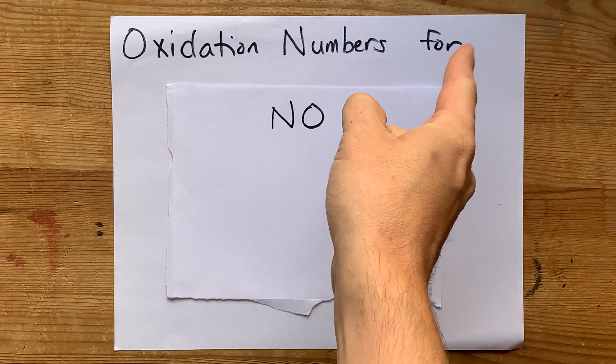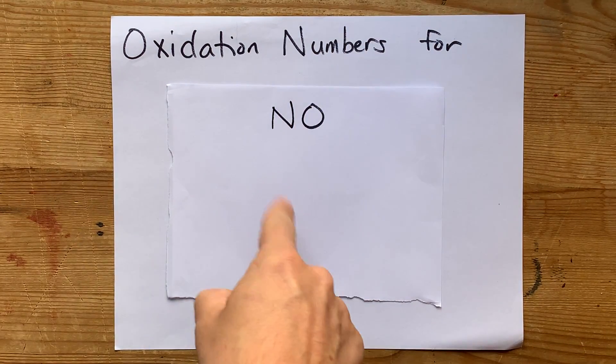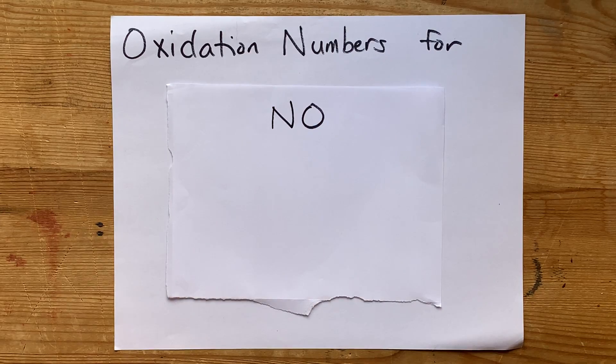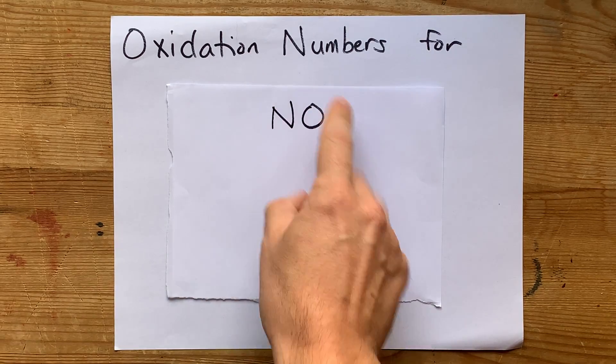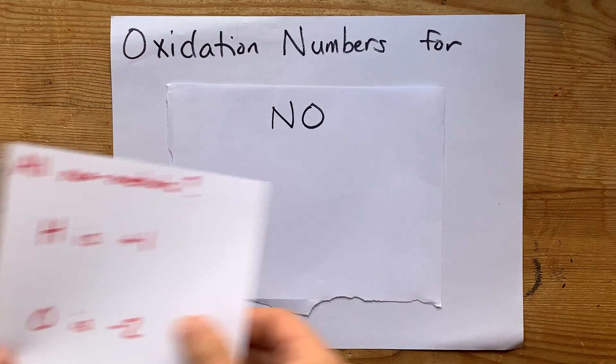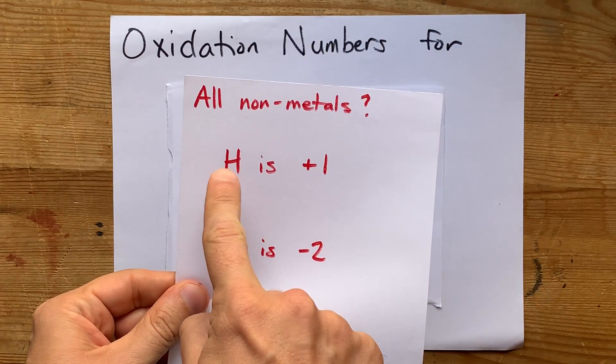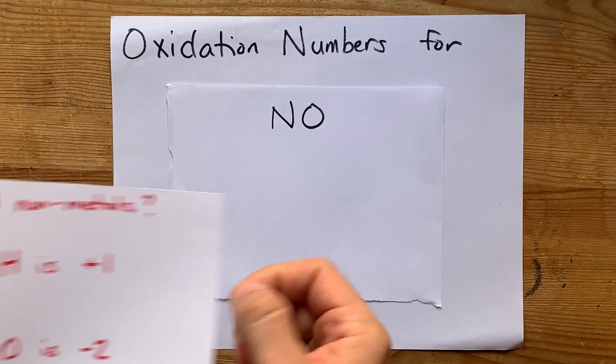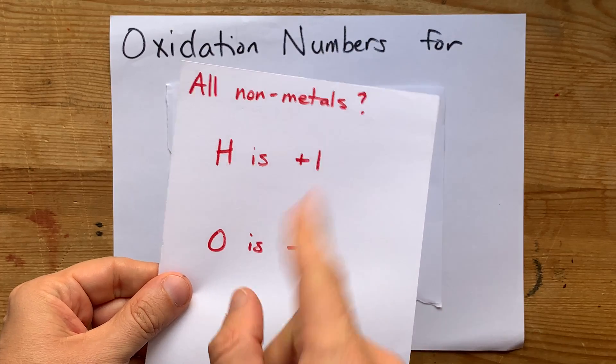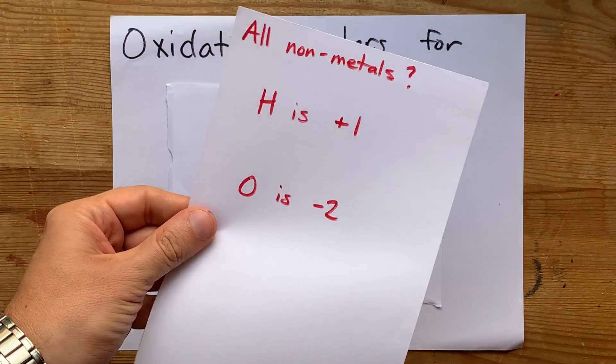We're going to do the oxidation numbers for NO, or nitrogen monoxide. For a particle that is all non-metals, the highest priority rule is that hydrogen gets a charge of, sorry, oxidation number of plus one. But there's no hydrogens here, so whatever.